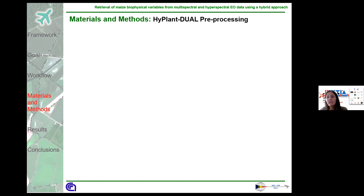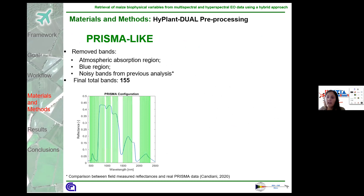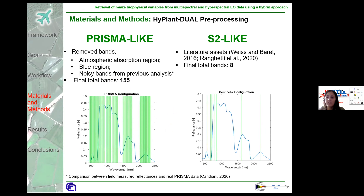As mentioned previously, the HyBird Dual dataset was resampled to Prisma-like and Sentinel-2-like wavelengths. Some analyses and pre-processing were done on both datasets. For the Prisma-like dataset, the blue bands were removed together with other bands selected from previous studies. The blue bands were removed together with the atmospheric water bands and the SWIR region, leaving HyBird Dual composed of 155 bands. For the Sentinel-2-like dataset, eight bands were used based on the literature, and their location on the spectrum is visible in the image. The same configuration was used for the real Sentinel-2 dataset.